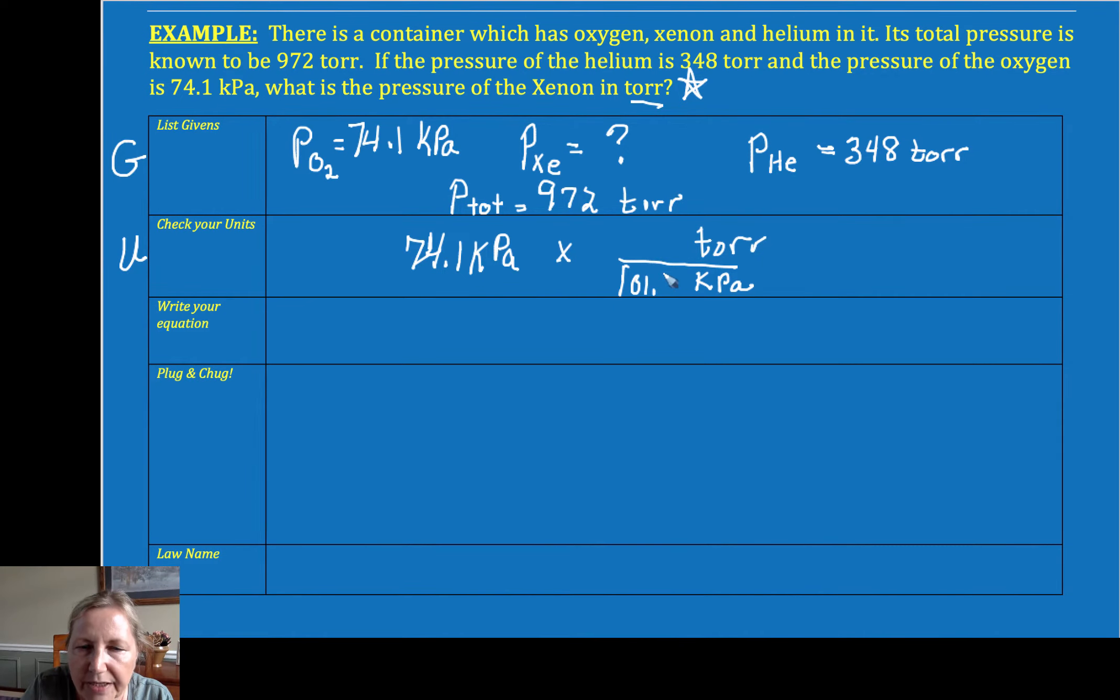101.33. The equivalent to one atmosphere in torr is 760. So that's how I get my conversion factor. And I get 556 torr. Kilopascals cancel. I'm left with torr.